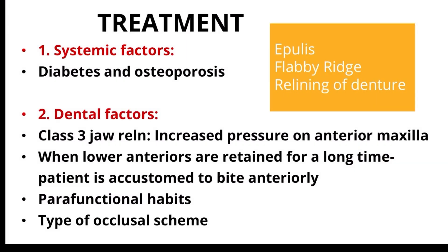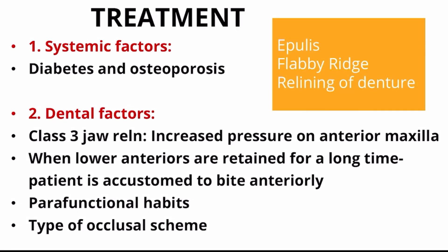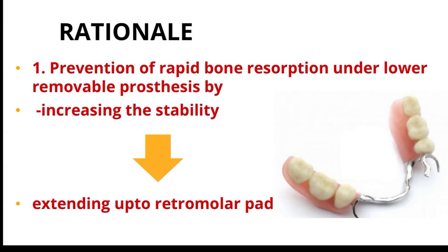Coming to treatment — apart from the obvious treatments for epulis, flabby ridge, and relining of the denture — the main factors to consider are systemic factors and dental factors. Systemic diseases that result in bone loss must be evaluated, along with dental factors such as Class III occlusion or parafunctional habits, and the type of occlusal scheme. The rationale of treatment is to prevent further rapid bone resorption under the lower removable prosthesis, achieved by increasing the stability of the lower denture by extending up to the retromolar pad.